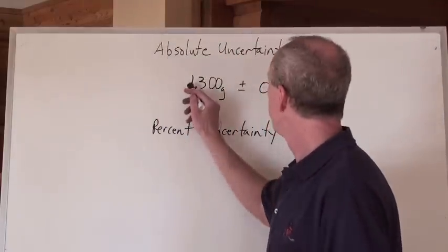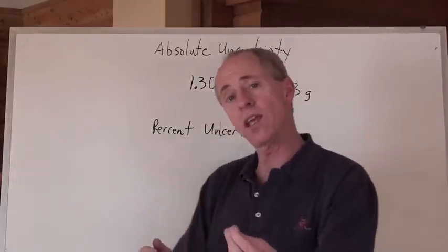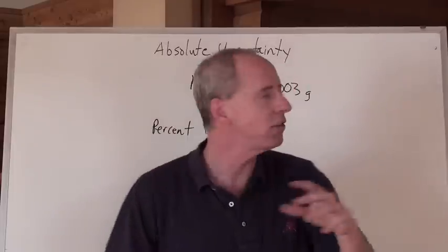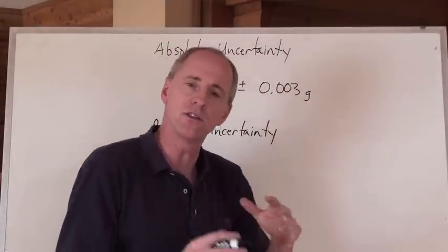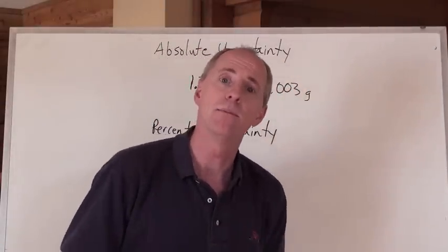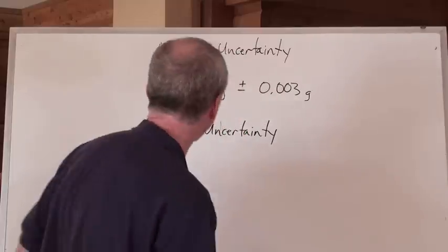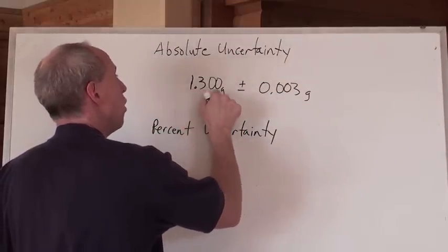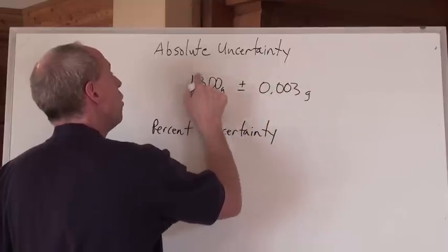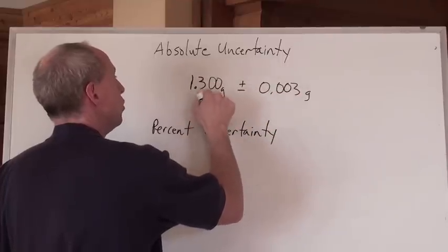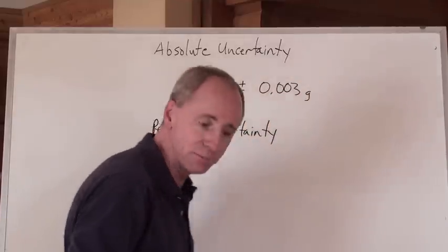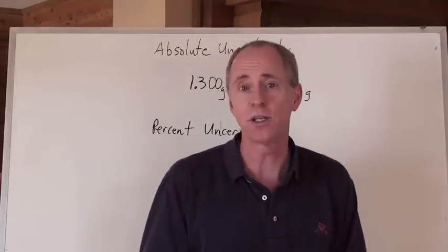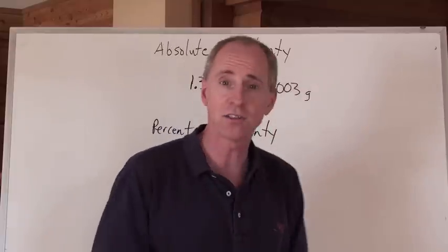So this number of 1.300 grams that I weigh on the scale of a certain chemical is really 1.300 grams plus or minus 0.003 in terms of how accurate that machine is going to be. Which means that the answer could be as high as 1.303 grams or as low as 1.297 grams. That's the range that that mass would fall in. That's a pretty good degree of accuracy for that scale.